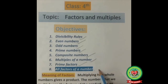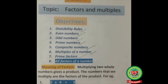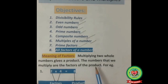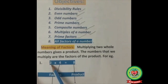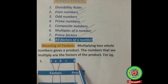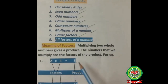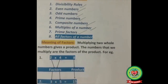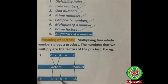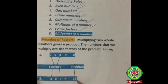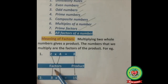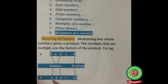What is a factor? Multiplying two whole numbers gives a product. The numbers that we multiply are the factors of the product. For example, 2 multiply 4 is equal to 8 — it means 2 and 4 are the factors and 8 is the product. Next example: 3 multiply 5 is equal to 15, so 3 and 5 are factors and 15 is the product.